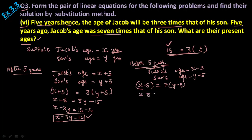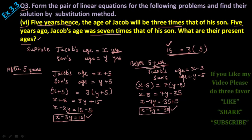Now x minus 5 is equal to 7y minus 35. Take this 7y on that side, x minus 7y equals to minus 35 plus 5. So x minus 7y is equal to minus 30. This is your equation number 2.